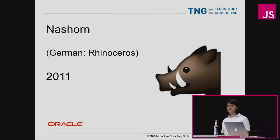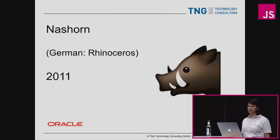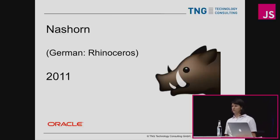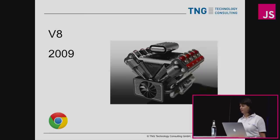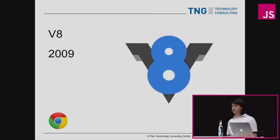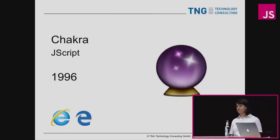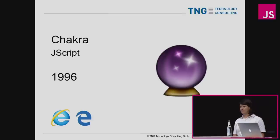We also have Nashorn. As I already said, Nashorn is the German word for Rhinoceros, so it's a wordplay on Rhino. It's a JavaScript engine written in Java by Oracle so that you can run JavaScript under the JVM. The next engine is V8 — the JavaScript engine in Chrome — and Node.js runs on it; that came out in 2009. Microsoft JScript or Chakra is also one of the older ones, coming out in 1996, and that's what we have in Internet Explorer and Edge.